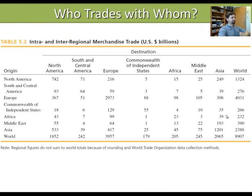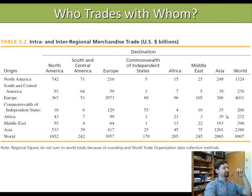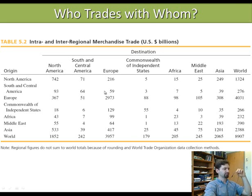Who trades with whom? Rich countries trade with rich countries; poor countries tend to trade with poor countries. Latin American countries trade primarily among themselves due to geographic proximity, and the same applies to Africa and to developed versus developing European countries. The United States trades most with Canada — America's main trading partner — then Europe and Japan, and only then with less developed countries and regions.